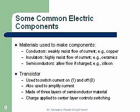A transistor is used to switch current — that's where we get our 1 or 0 for our on and off states, our binary logic. Transistors are also used to amplify current. They're made of three layers of semiconductor material, with a charge applied to the center layer, which controls the switching.